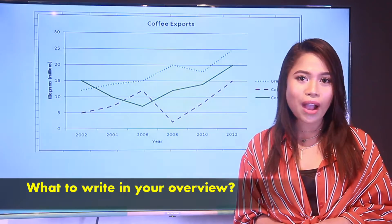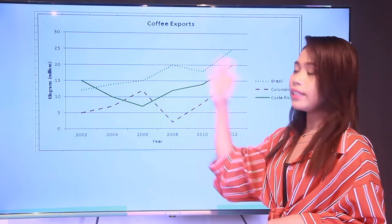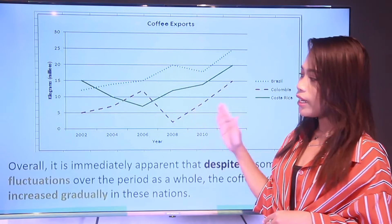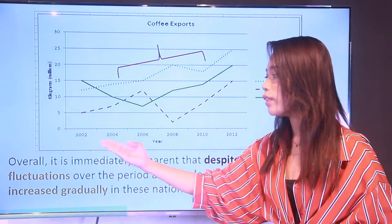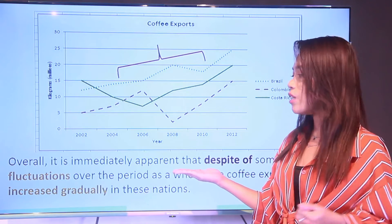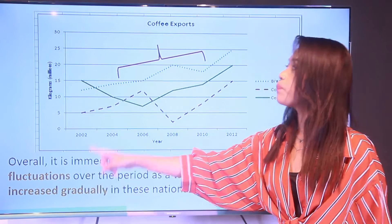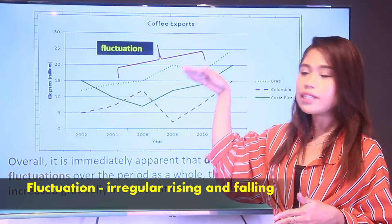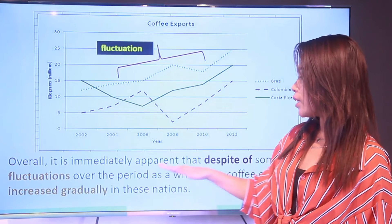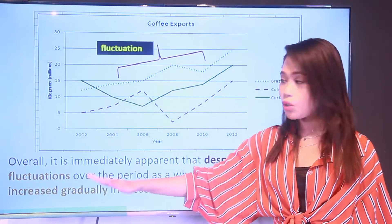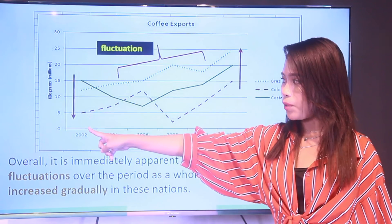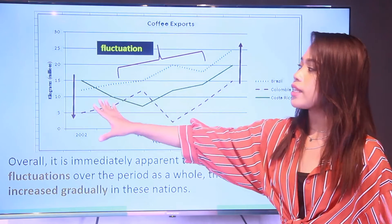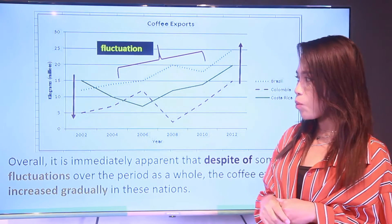Now let's move on to what to write in your overview. Looking at the graph again, find the most noticeable and significant patterns. Here is an example overview: 'Overall, it is immediately apparent' — meaning we can easily notice it — 'that despite some fluctuations' — fluctuations meaning sudden rises and lows — 'over the period as a whole, coffee exportation increased gradually.' We can see that at the beginning of the time period levels were lower compared to the end, showing a gradual increase of coffee exports from all three countries.